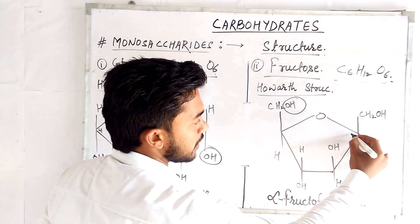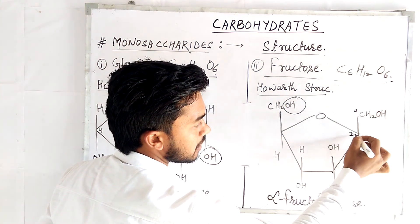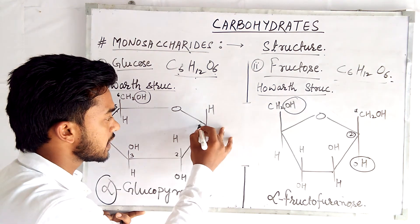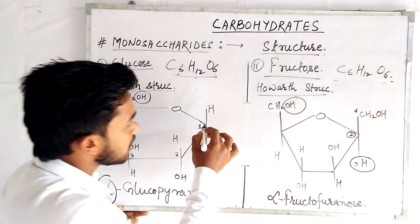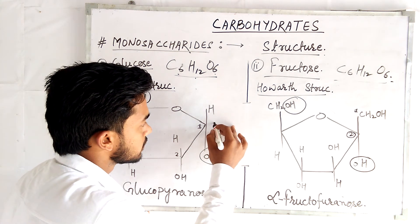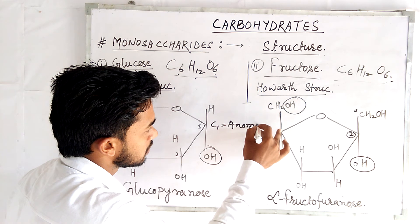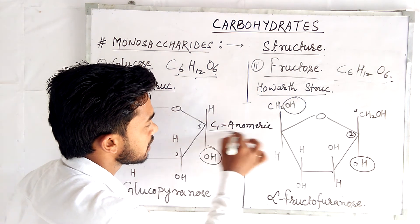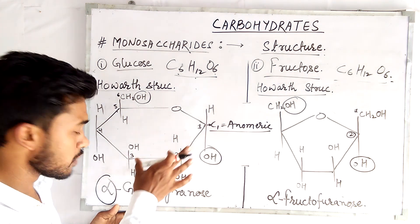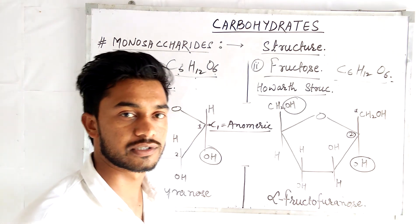In the Haworth structure, carbon number 1 in glucose is the anomeric carbon. The anomeric carbon is what determines whether the sugar is alpha or beta form. This structure is also known as alpha glucose, and the corresponding fructose ring structure is known as alpha fructose.